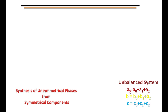An unbalanced phasor can be resolved into its symmetrical components as a0, a1, a2, b0, b1, b2, c0, c1, c2. For voltage: VA decomposes into VA0, VA1, VA2; VB into VB0, VB1, VB2; VC into VC0, VC1, VC2. Applied to current: IA equals IA0 plus IA1 plus IA2; IB equals IB0 plus IB1 plus IB2; and similarly for phase C.